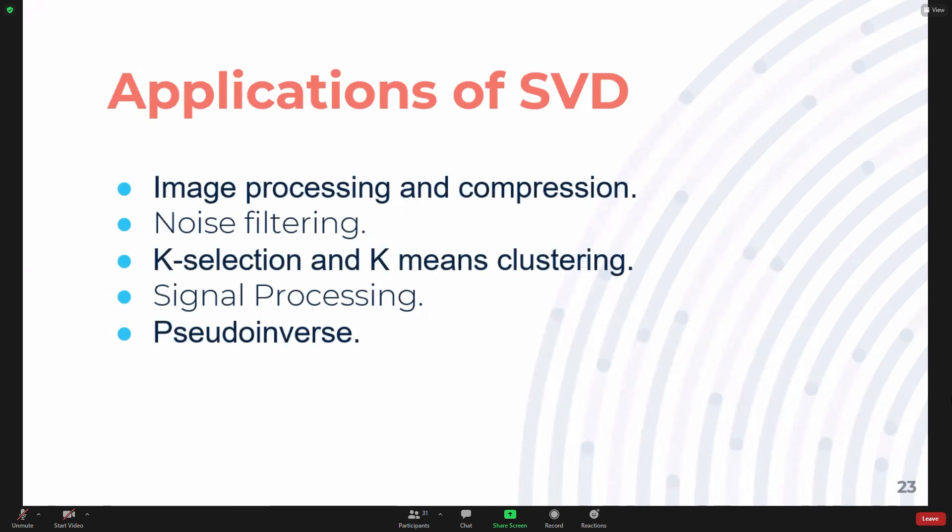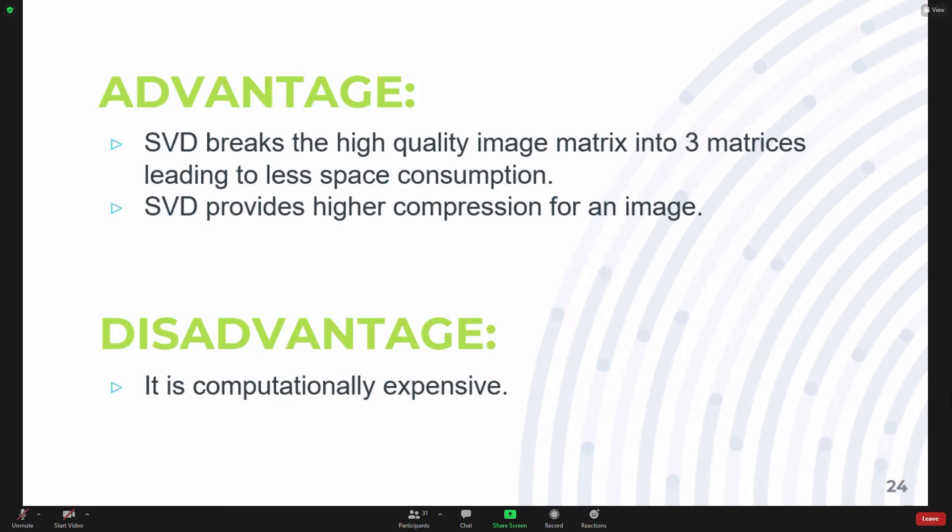The advantage of SVD is that SVD breaks a high-quality image matrix into a product of three matrices leading to less space consumption without any disturbance in quality of an image. SVD provides higher compression levels for an image. The only disadvantage of SVD is that it is computationally expensive.